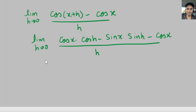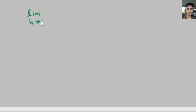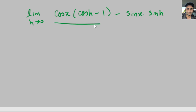Now I'm going to bring like terms together and factor out cosine of x. So the limit as h goes to zero of cosine of x times cosine of h minus cosine of x minus sine of x times sine of h, all divided by h. I'm going to factor out cosine of x from the first two terms, so we get the limit as h goes to zero of cosine of x times the quantity cosine of h minus one, minus sine of x times sine of h.